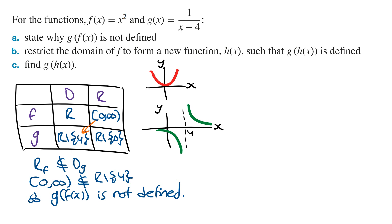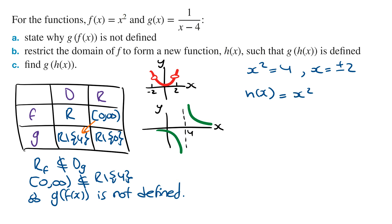f(x) will equal 4 when x is equal to plus or minus 2. So if we restrict the domain of f to all real numbers except for −2 and 2, then its range will be from 0 to infinity, except for 4. So h(x) has the rule x², where its domain is all real numbers except for −2 and 2. Because the range of h(x) is now a subset of the domain of g(x), the composite function g∘h(x) is defined.